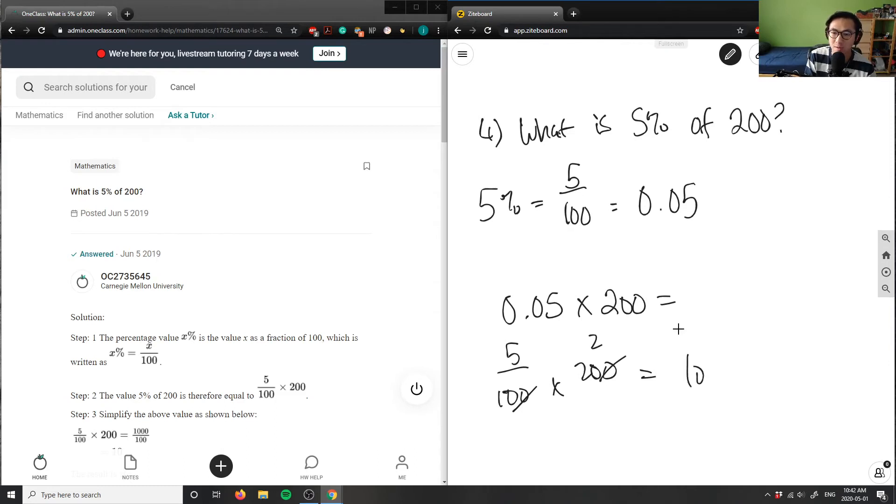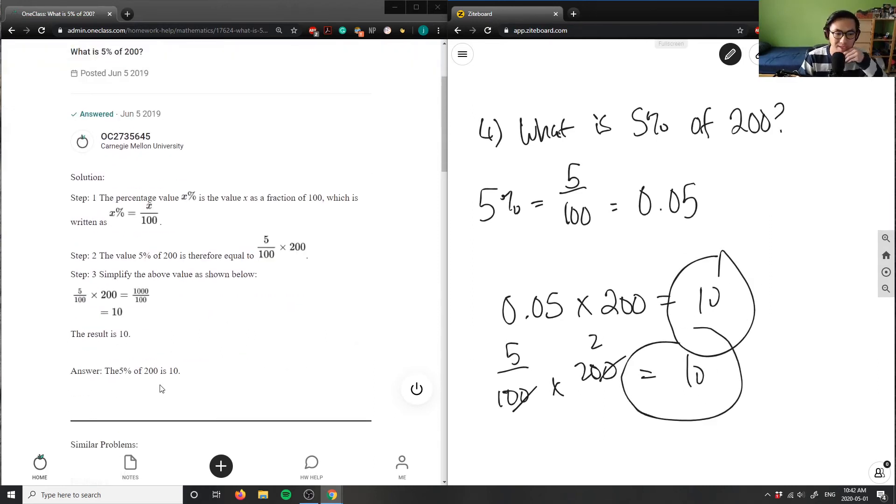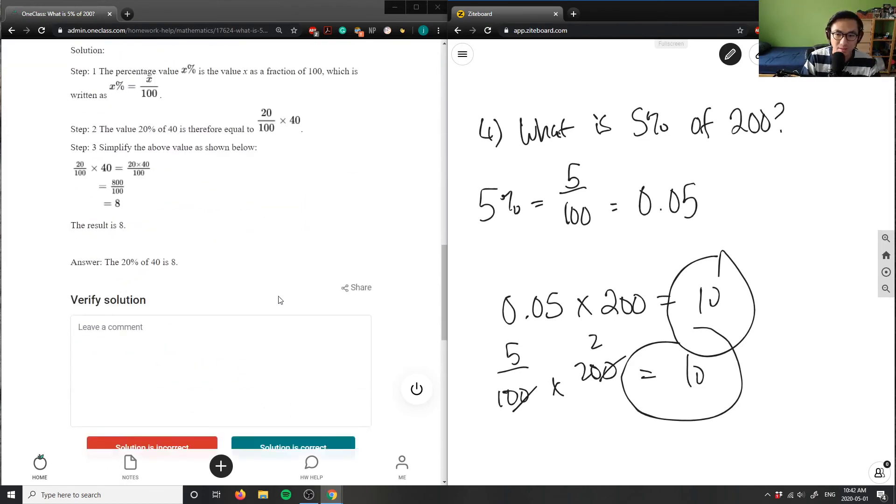So 5 times 2 is 10. This is my answer for this problem. What is 5% of 200? It is simply 10. The solution is correct.